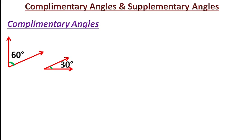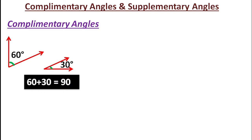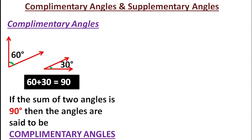Similarly, angle 2 and angle 4 will also be equal — they are called vertically opposite angles. Next, complementary angles: two angles whose sum is 90 degrees. Here the first angle is 60 degrees and the second is 30 degrees; 60 plus 30 equals 90 degrees. These are complementary angles. The complement of 60 is 30, and the complement of 30 is 60.